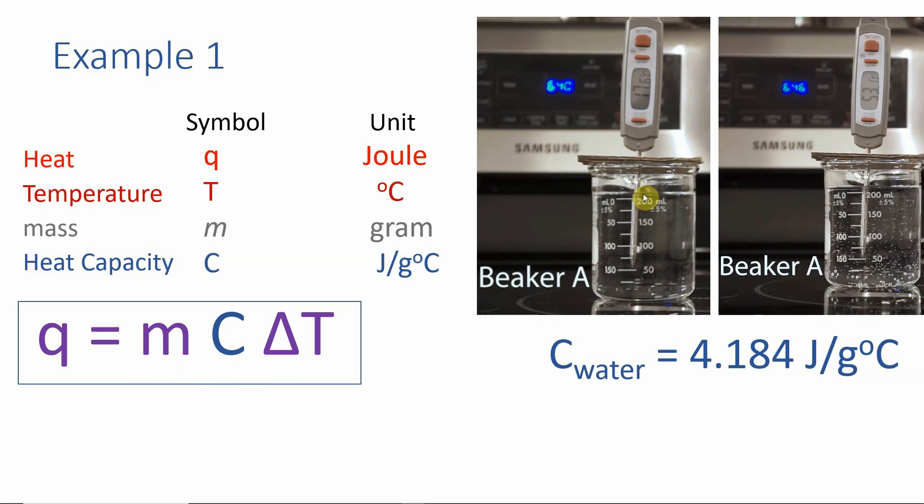And I'm going to suggest we have about 210 milliliters of water. So let's say we have 210 grams of water since the density is one gram per mil. All right if it's 210 grams calculate how much heat was absorbed by beaker A.